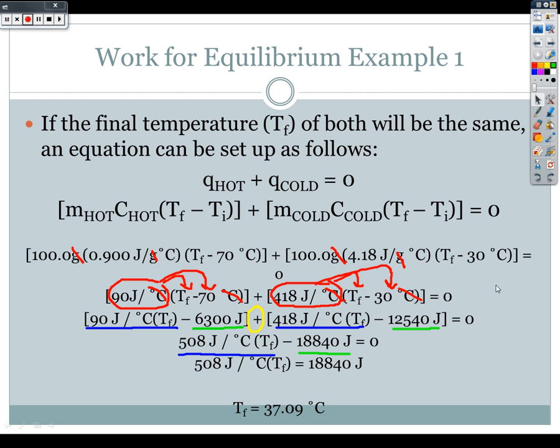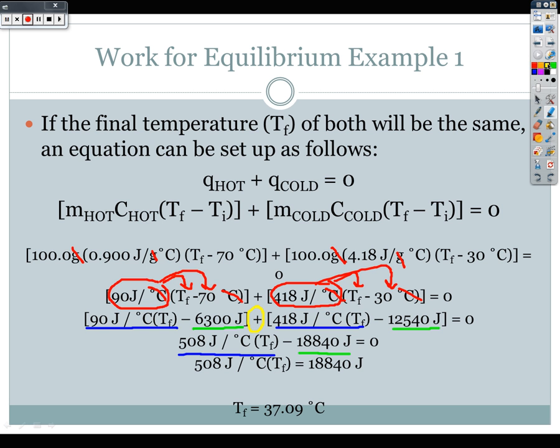So that's by using the equation Q hot plus Q cold is equal to zero. And I highly recommend this equation. It's probably my preferred method because there's no issues with negatives and positives, and I'll get to that in the next method.